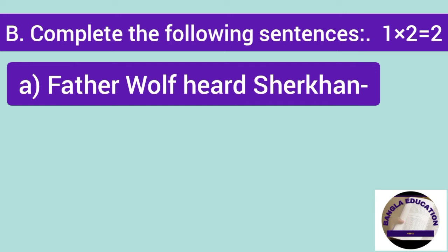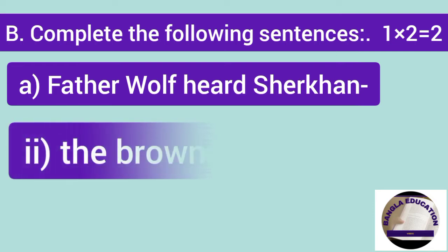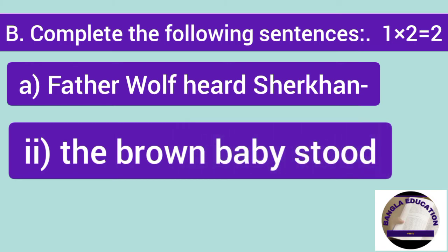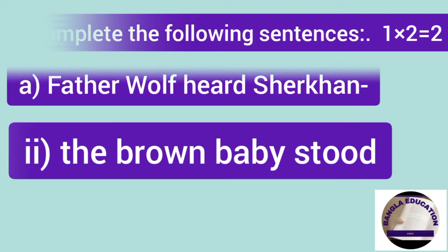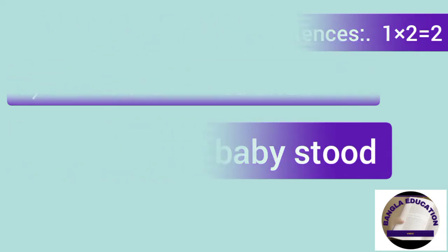Reading scene is a passage, there is a first line answer. Next question, B. The brown baby stood. So answer is, who could just walk and holding on by a low branch.